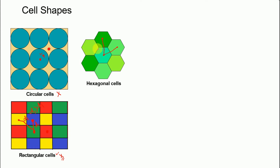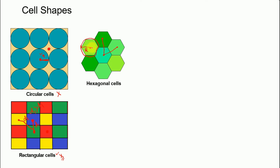Another important factor: if we consider a specific hexagonal cell and draw a circle around its center, the coverage area is quite similar to what we had for an isotropic antenna with a circular cell. We can call this dimension R, the radius. R applies at the edges of the hexagon. Moreover, if we calculate the distance between the centers of two different cells, we call this D, the distance between two cells.